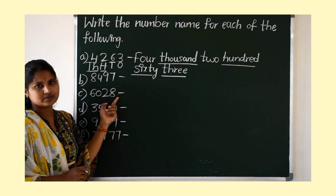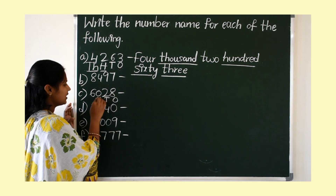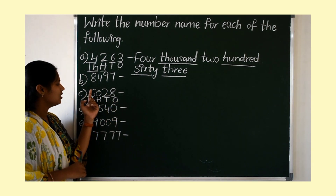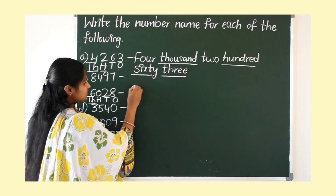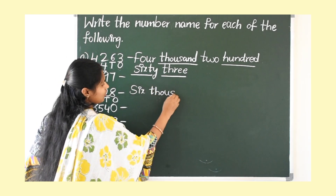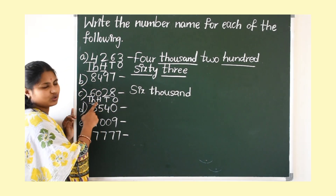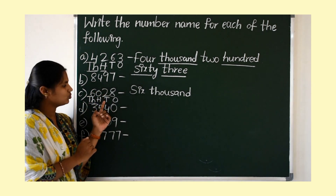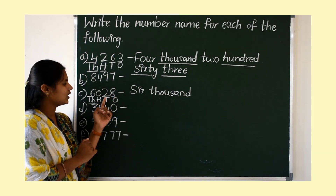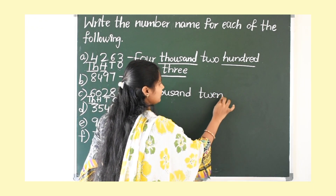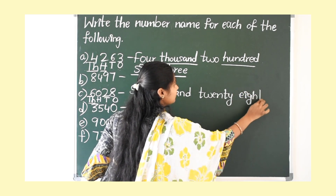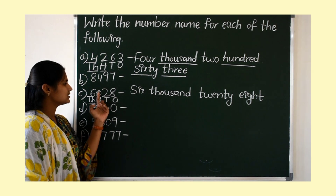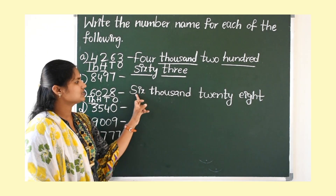Next: 6028. Write down place values — 1's, 10's, 100's, and 1000's. We have 8 ones, 2 tens, 0 hundreds, and 6 thousands. How many 1000's? 6000. In the 100's place we have 0, so don't write the hundreds spelling. Go to the 10's: 2 tens make 20, and 8 ones. So the number name is six thousand twenty-eight.